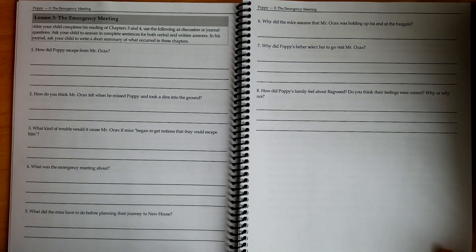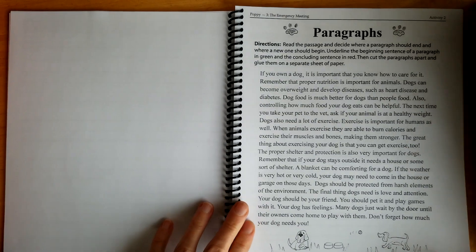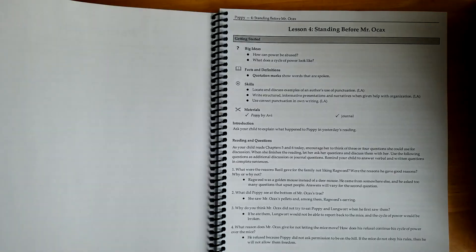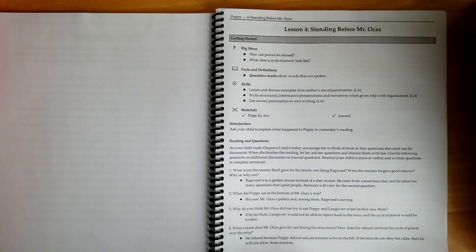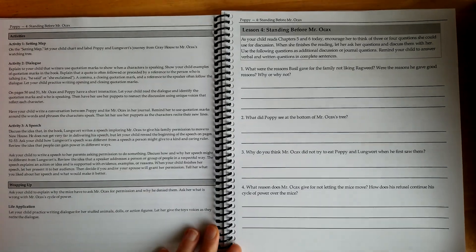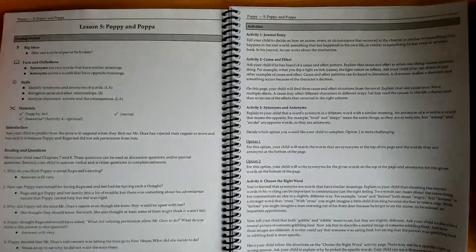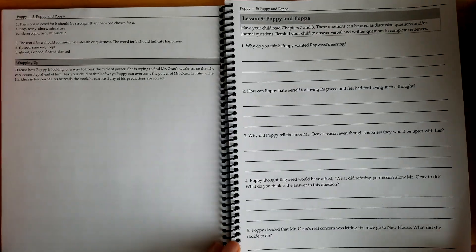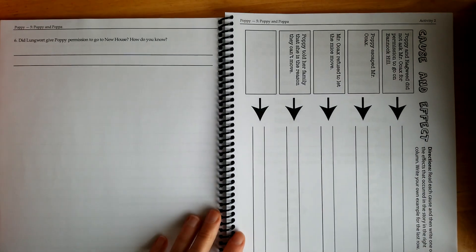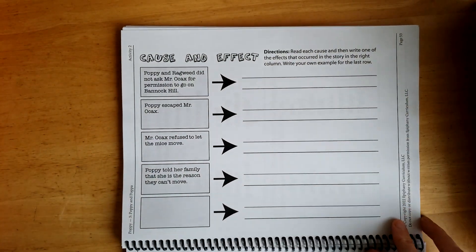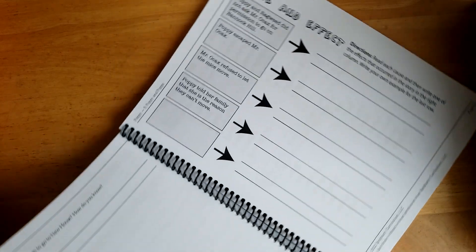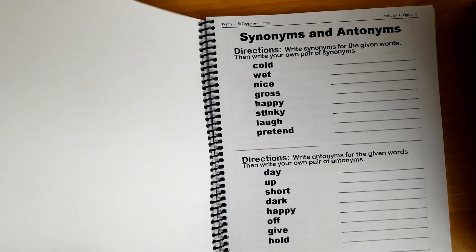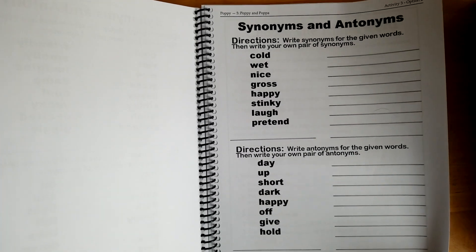More reading comprehension questions for the next chapters. Paragraphs - she cut these out and put the paragraph in order. Cause and effect, synonyms, antonyms. That's option one. This is option two, a little bit harder, more challenging.